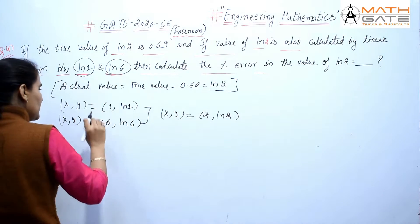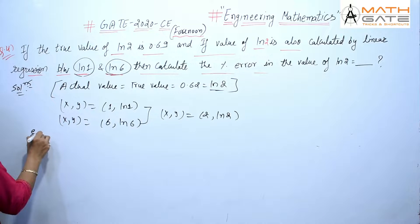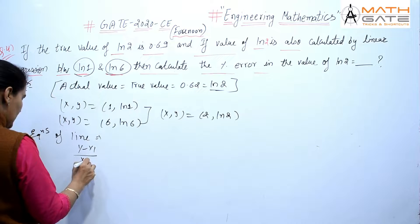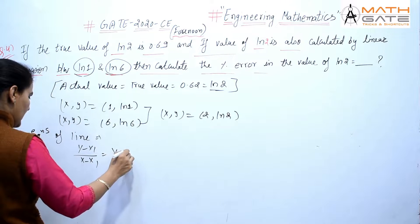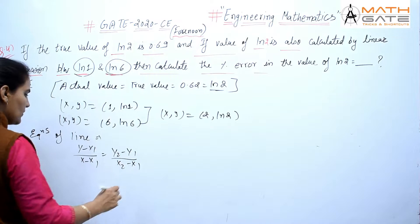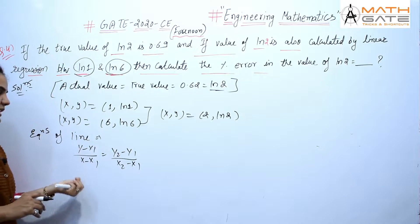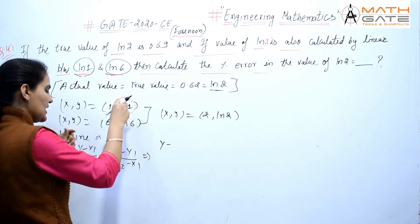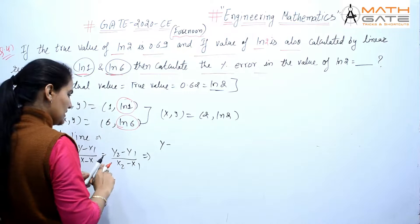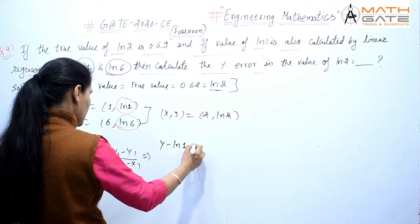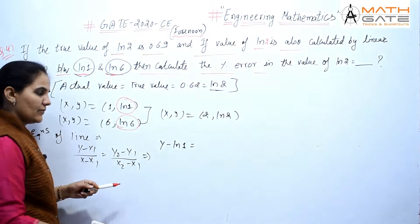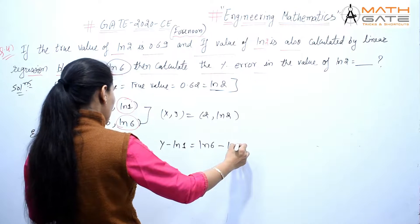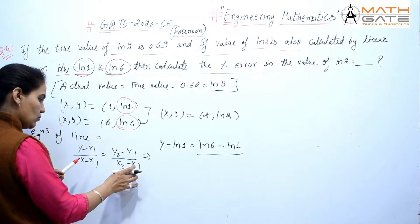Now, the equation of the line between two points is: (y - y1) / (x - x1) = (y2 - y1) / (x2 - x1). So we write: y minus y1, where y1 is ln1. And y2 minus y1 is ln6 minus ln1, divided by x2 minus x1.